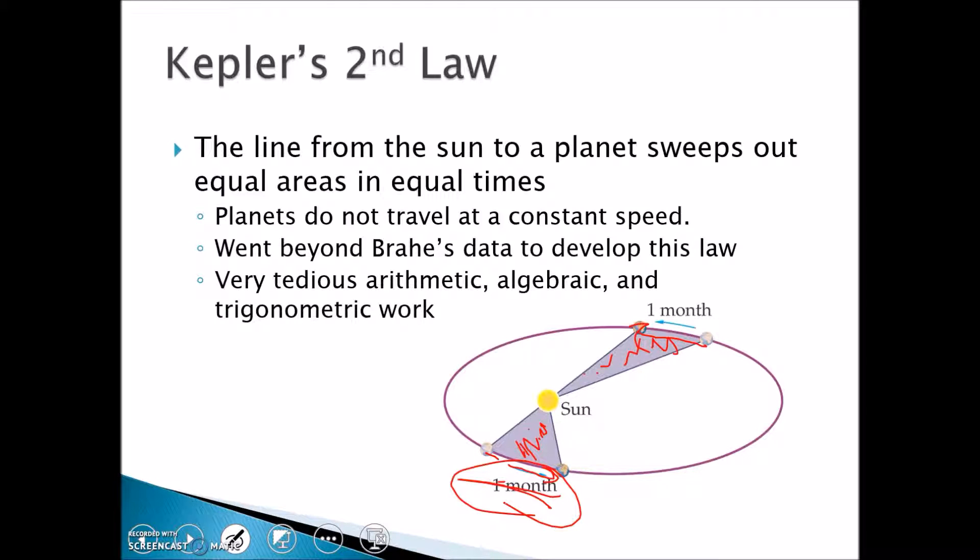In order for Kepler to develop this, remember this is all by hand in the late 1500s, early 1600s, incredibly difficult algebra and trig work was required. What Kepler did not realize was that this is one of the first examples of a conservation law - conservation of angular momentum - and to me this is one of the great aspects of this particular second law.